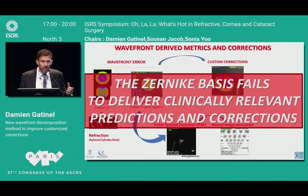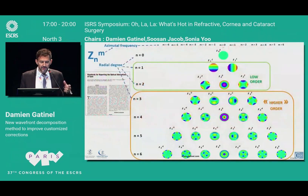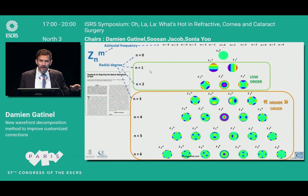But there is a big problem with Zernike polynomials that has been overlooked in ophthalmology. In fact, they fail to deliver accurate predictions. It's not really clean high and low order — some terms are present in high-order modes that actually belong to low order.